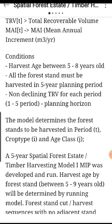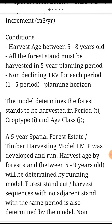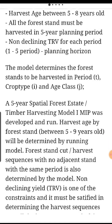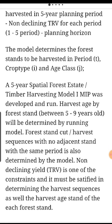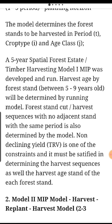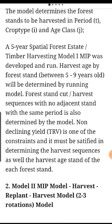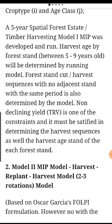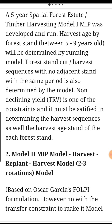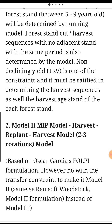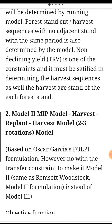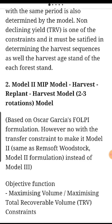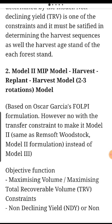Conditions: harvest age between 5 to 8 years old. All forest stands must be harvested in a 5-year planning period. Non-declining TRV for each period, 1 to 5, planning horizon. The model determines the forest stands to be harvested in period T, crop type I, and age class J. Forest stand cut harvest sequence with no adjacent stands in the same period is also determined. Non-declining yield (TRV) is one of the constraints.